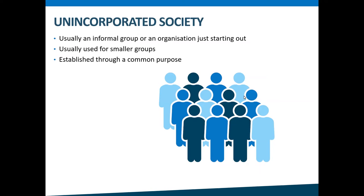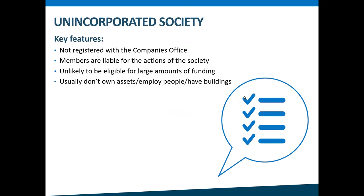We're going to start with the most informal form a charity can take. An unincorporated society is usually an informal group or an organization that is just starting out. They're usually used for smaller groups who get together for a common purpose — things like a chess club, tree planting in your neighbourhood, or play groups. Unincorporated societies are not registered on any of the Companies Office registers and they're not a legal entity. An unincorporated society doesn't provide protection from liability — the society can't sue anyone or be sued, and each individual person is liable for the actions of the group.